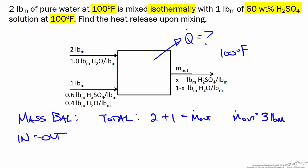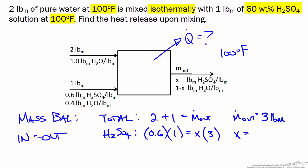Now we can use an H₂SO₄ balance or a water balance to find the concentration. Using H₂SO₄: the mass fraction of the H₂SO₄ stream entering the mixing unit is 0.6, multiplied by the total mass of 1 pound. That equals the mass fraction of the mixture, x, times the total mass of 3 pounds. So the mass fraction of H₂SO₄ in the mixture is equal to 0.2.